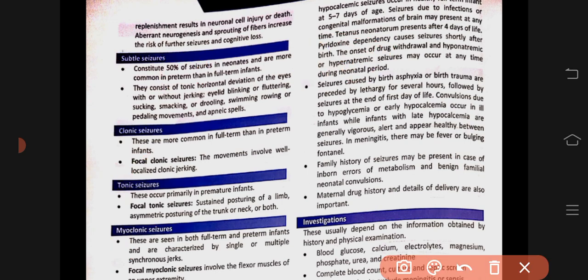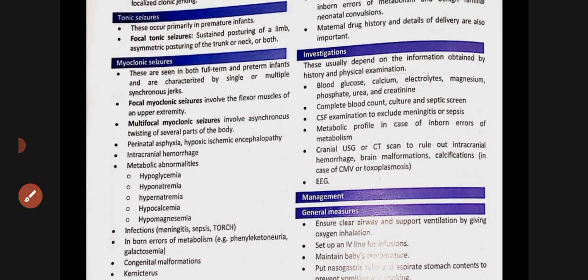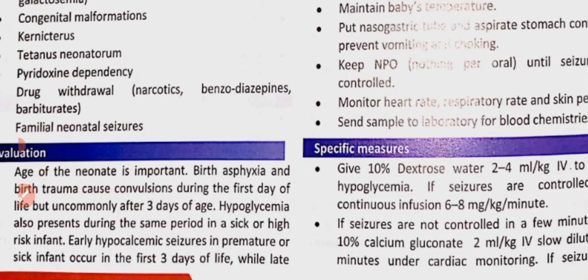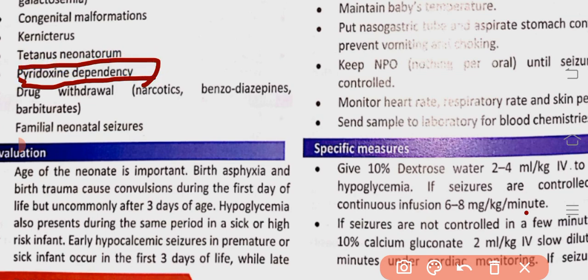Next is the evaluation of the baby in seizures. First we note the age. If seizures start soon after birth, that is due to pyridoxine deficiency — pyridoxine deficiency causes seizures to begin shortly after birth.